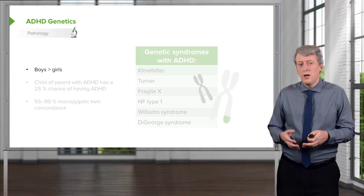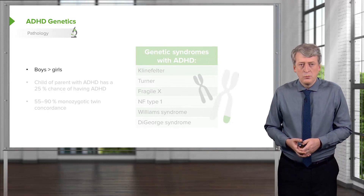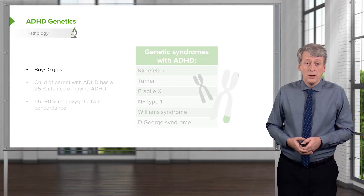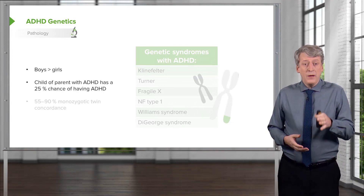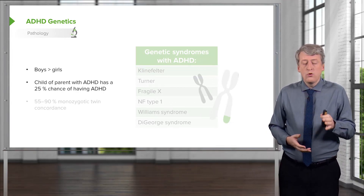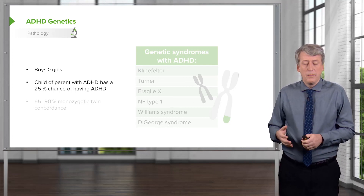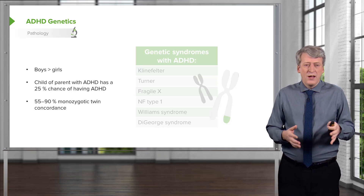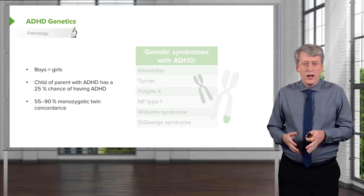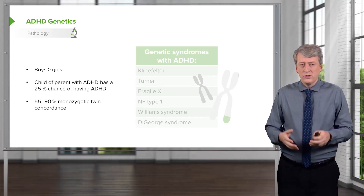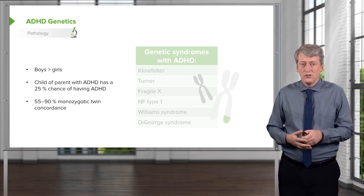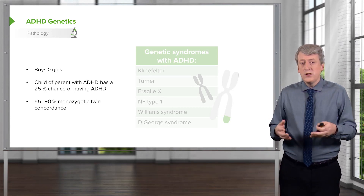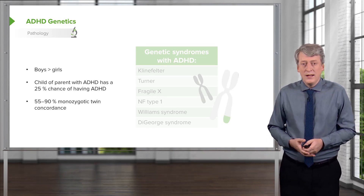There seems to be a genetic predisposition to ADHD. Boys are much more likely than girls to develop the problem. A child of a parent with ADHD has a 25% chance of developing ADHD themselves. There is also a 55 to 90% monozygotic twin concordance, indicating strong genetic factors at work. There are also genetic syndromes that predispose individuals to developing ADHD.